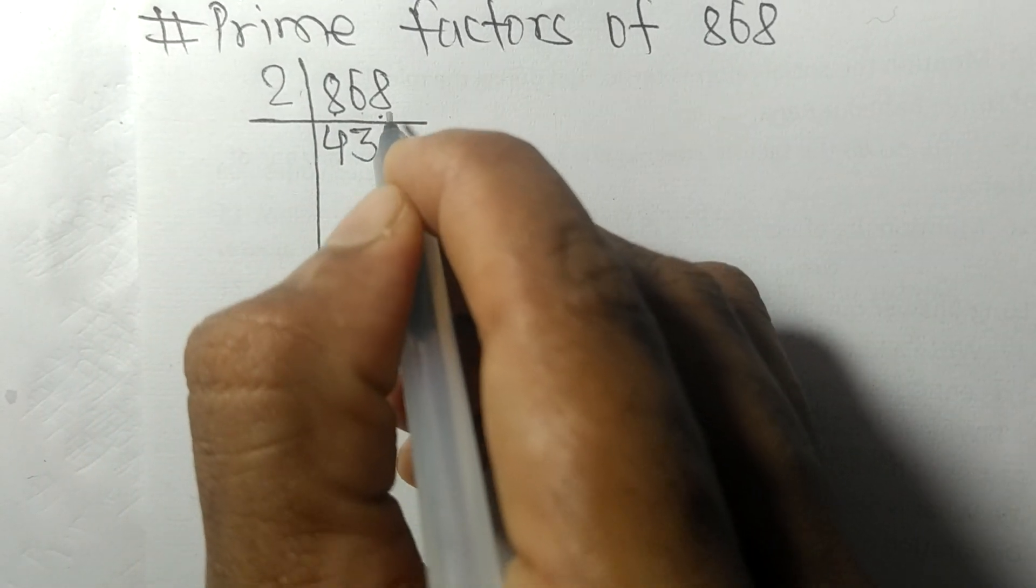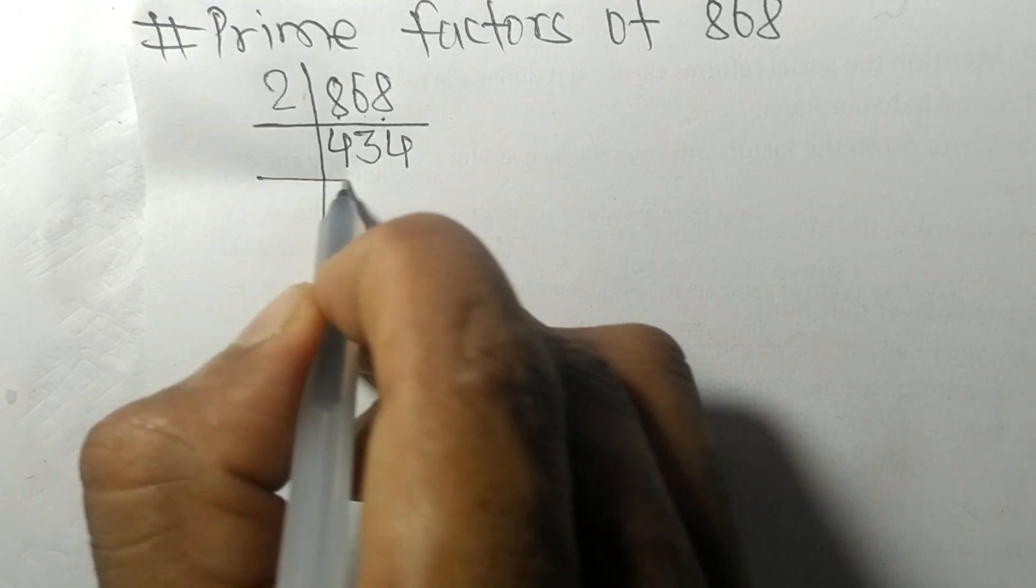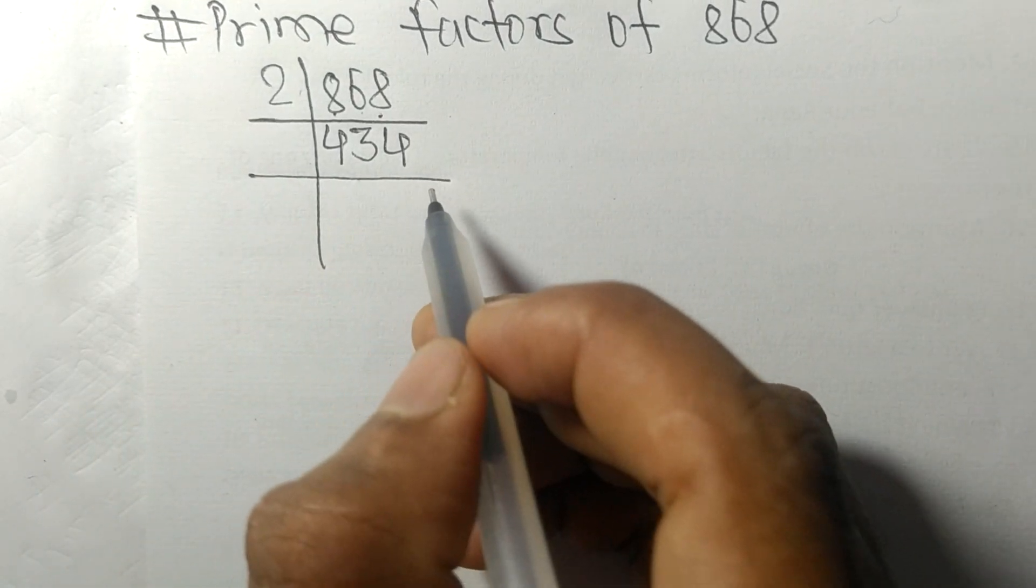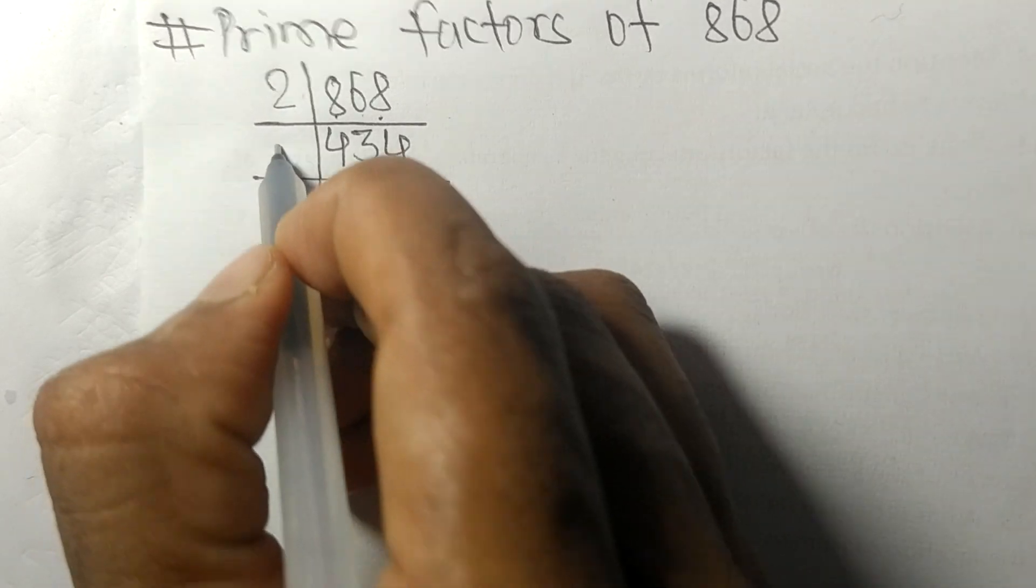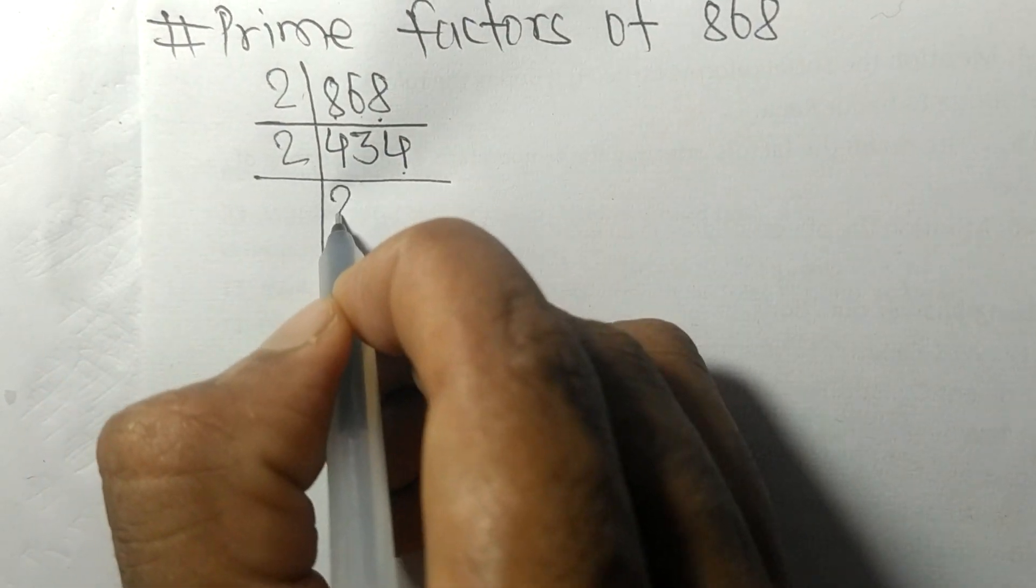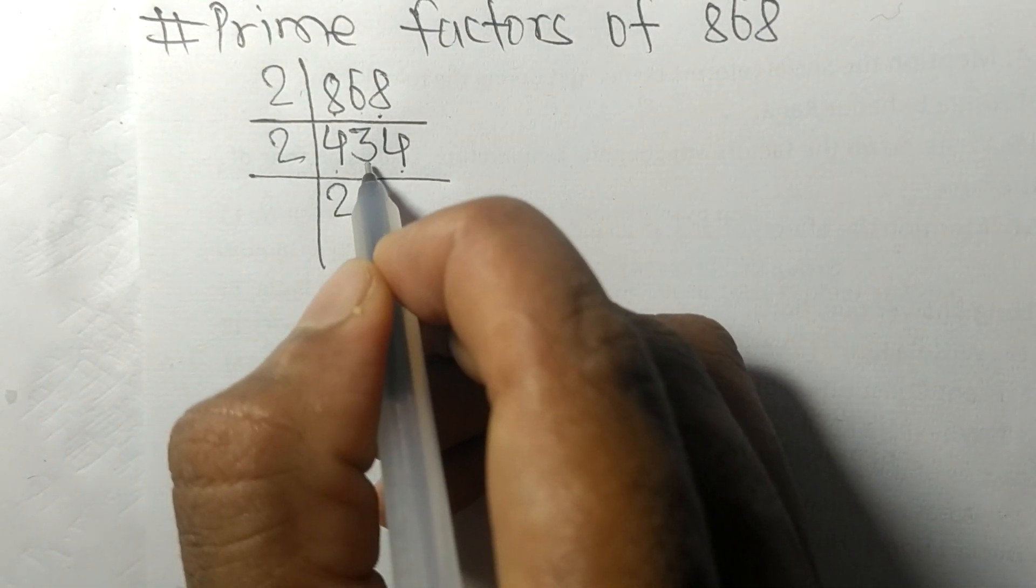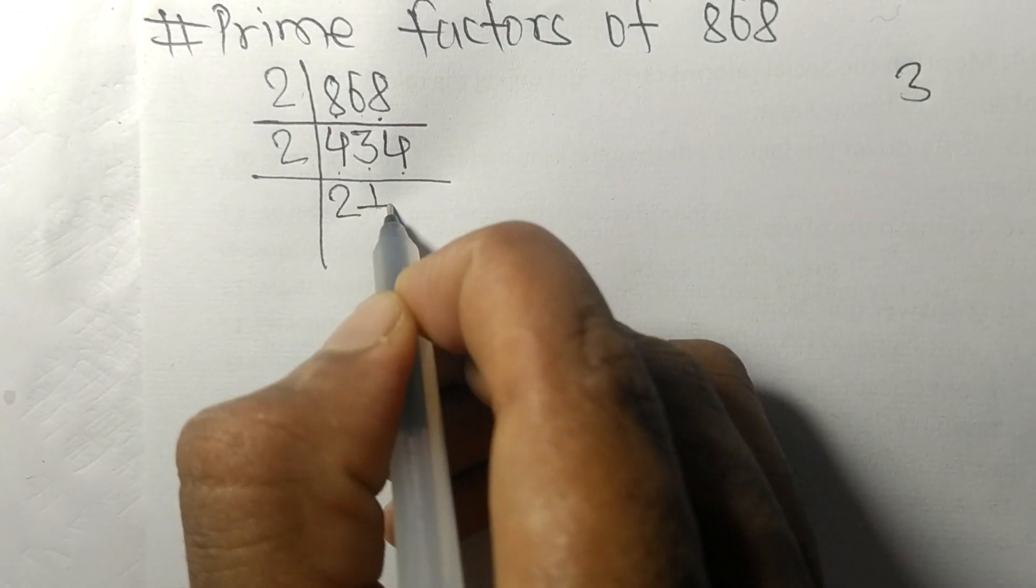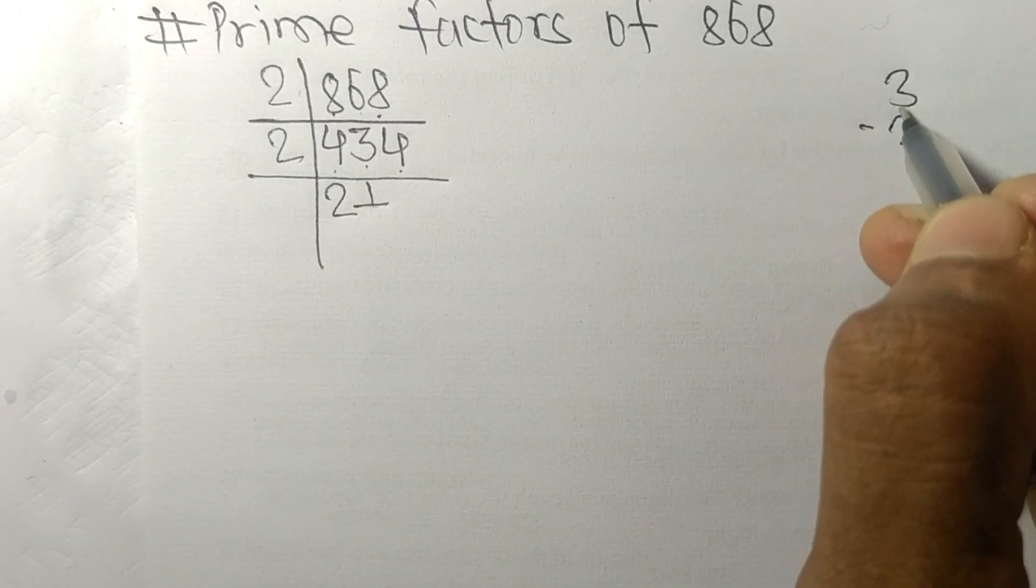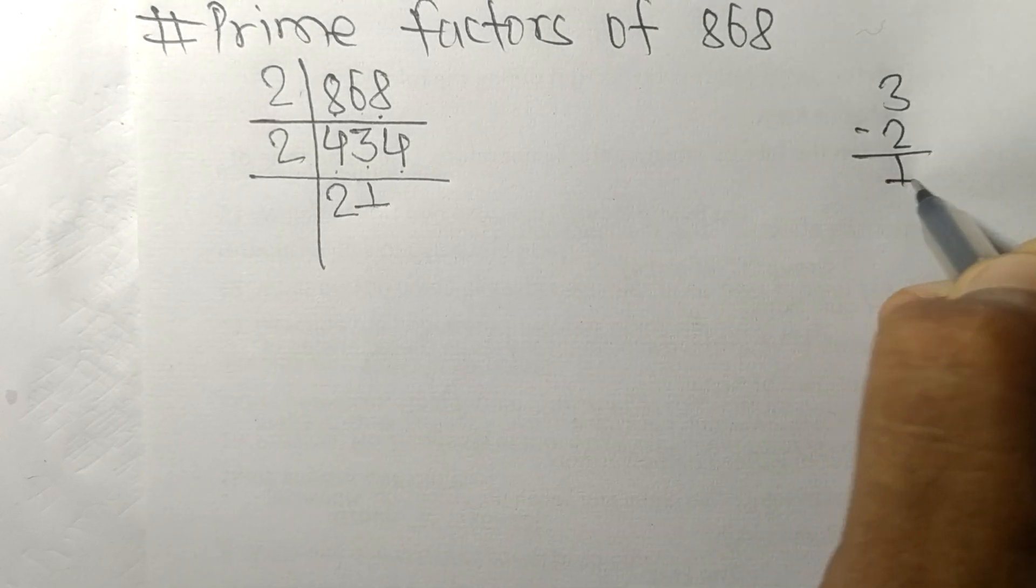2 times 4 means 8. Again it has even number 4 at last, so it is divisible by 2. 2 times 2 means 4. Now we have 3, so 2 times 1 means 2. On subtracting we get 1.